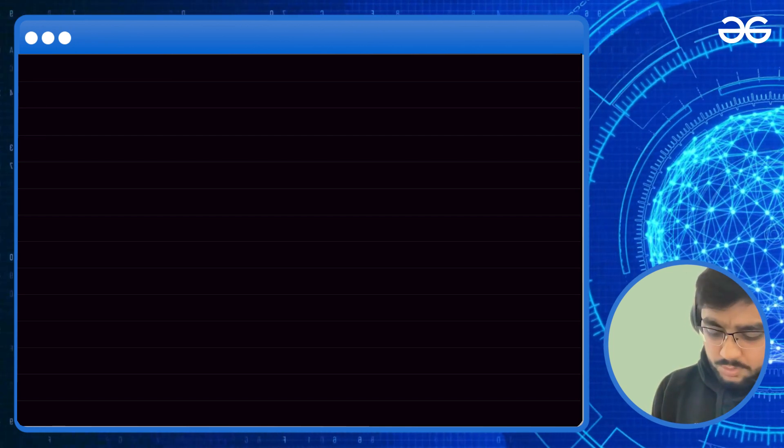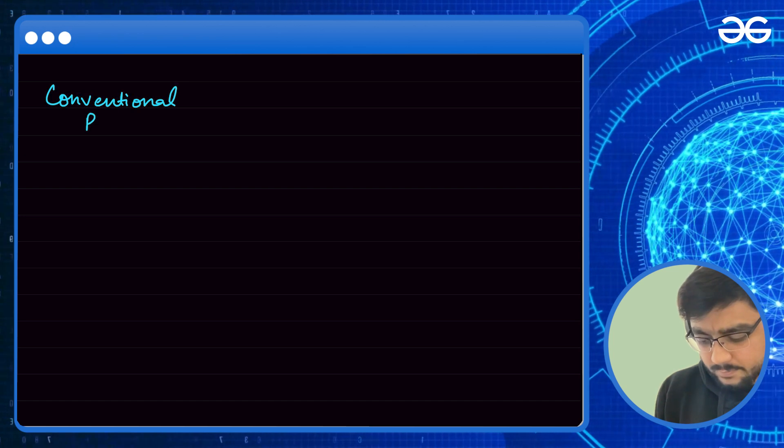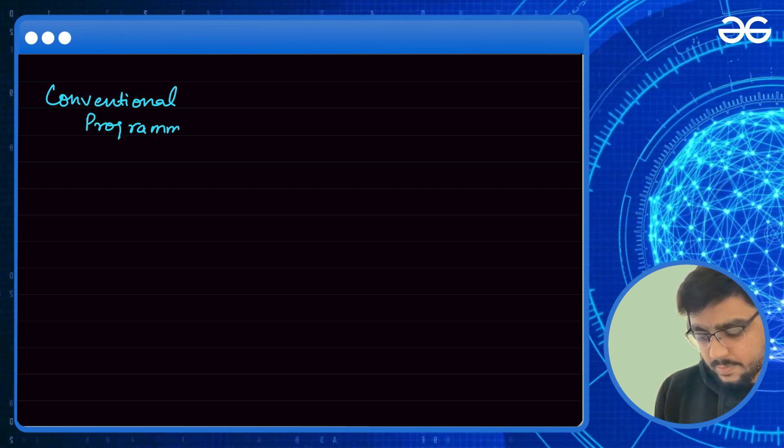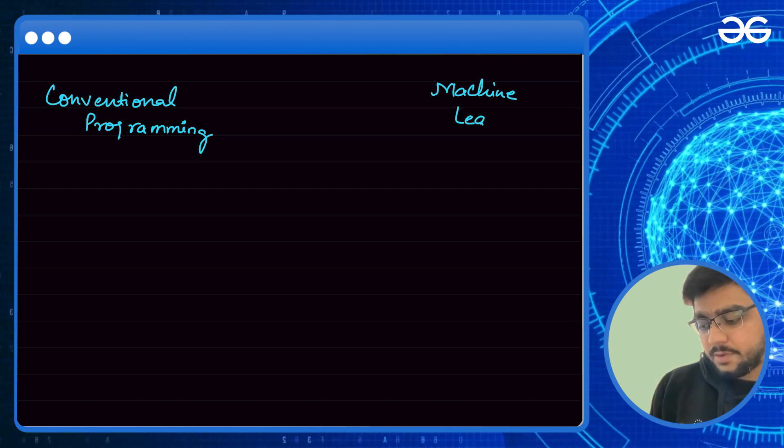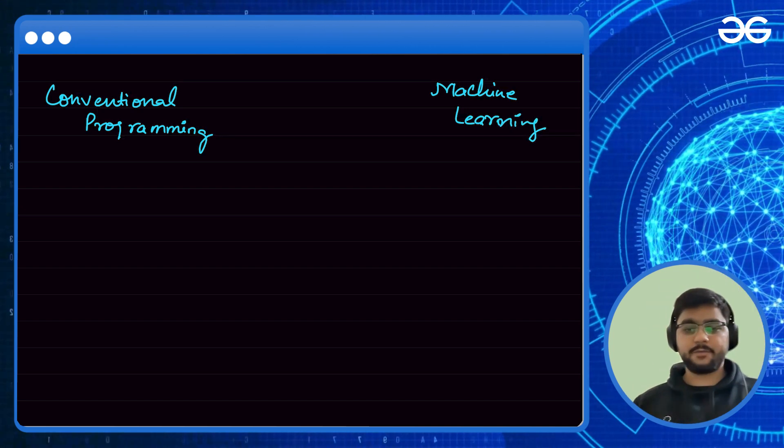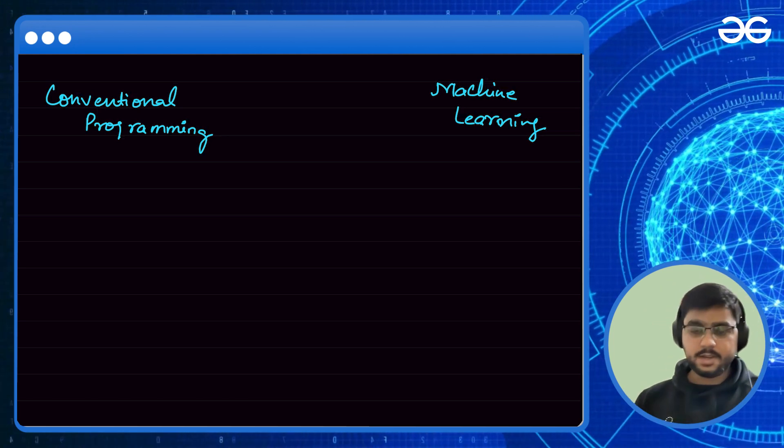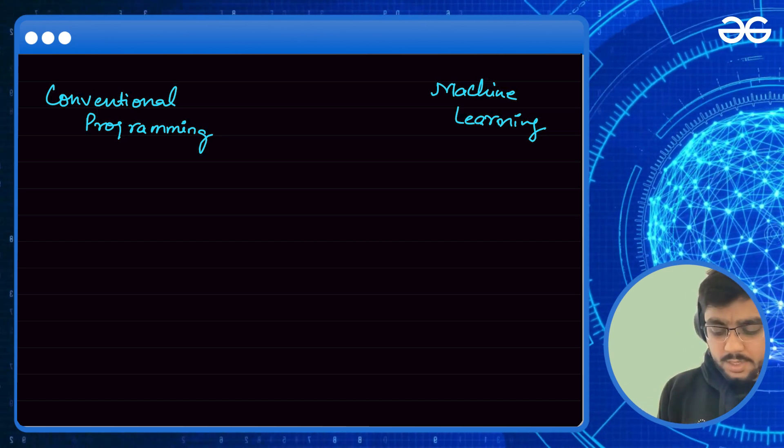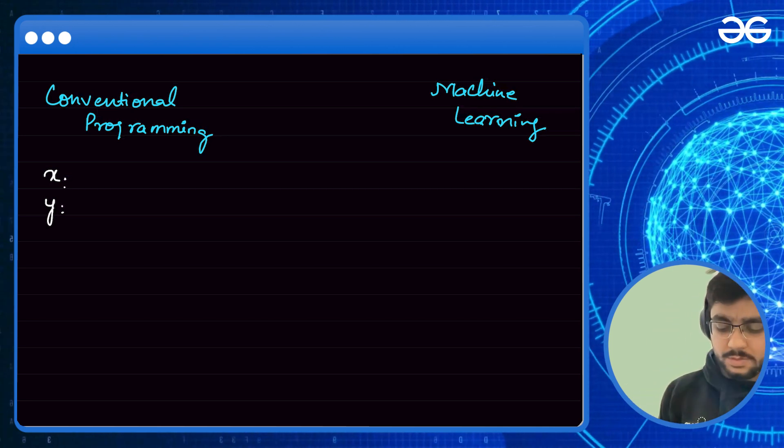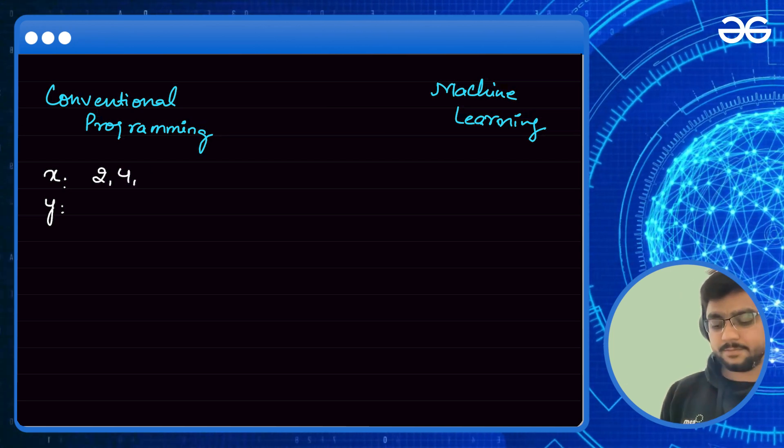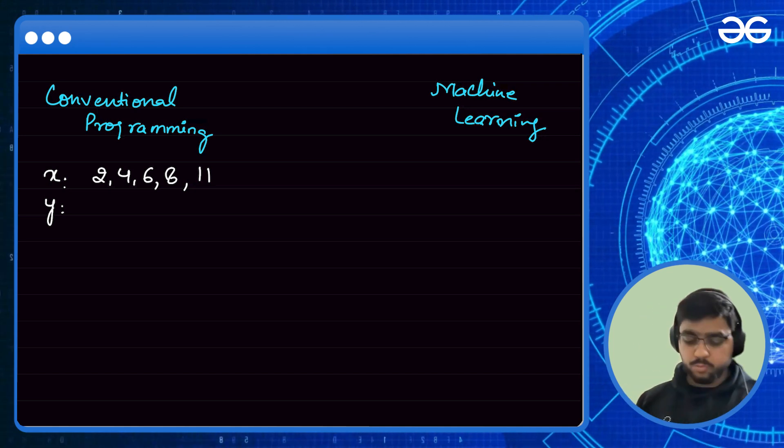Now guys, in case of conventional programming, what happens? For example, any platform like GeeksforGeeks, CodeChef, HackerRank - you are given few test cases or the problem statement where you are given input x and your output y. For example, in case of input-output, I give you numbers like 2, 4, 6, 8, 11. Let's say I've given you an array having numbers 2, 4, 6, 8, 11, and the output coming out of it is 4.